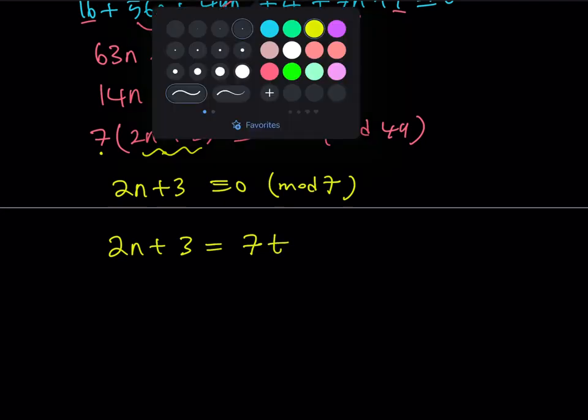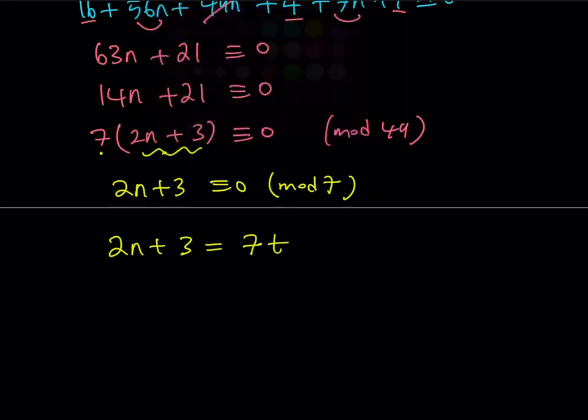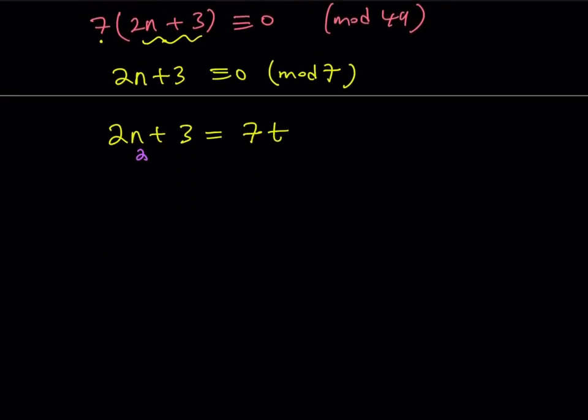So now, at this point, what I can do is, I can just, again, guess and check my solution here. Well, it's kind of easy to find because if n = 2, we get 7, which is a multiple of 7. So n = 2 works, which means that our original expression, remember, we wrote x as 4 + 7n.